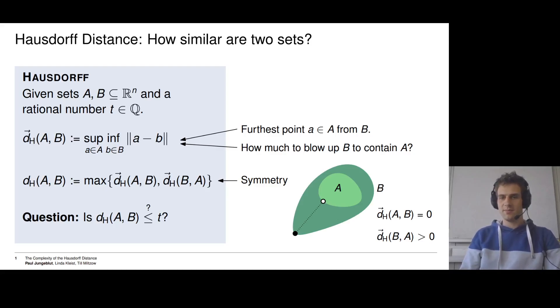On the other hand, there are points in B, like this black point, from which it is very far to reach the closest point in A, in this case the white point. So we see that the directed Hausdorff distance between B and A is strictly greater than zero. And so the Hausdorff distance is also greater than zero.